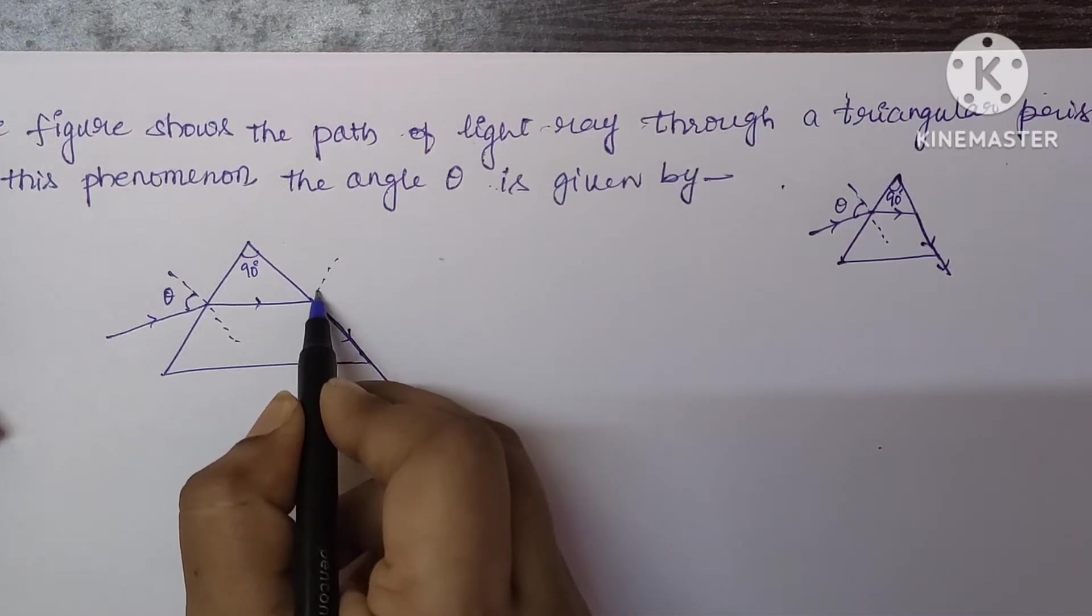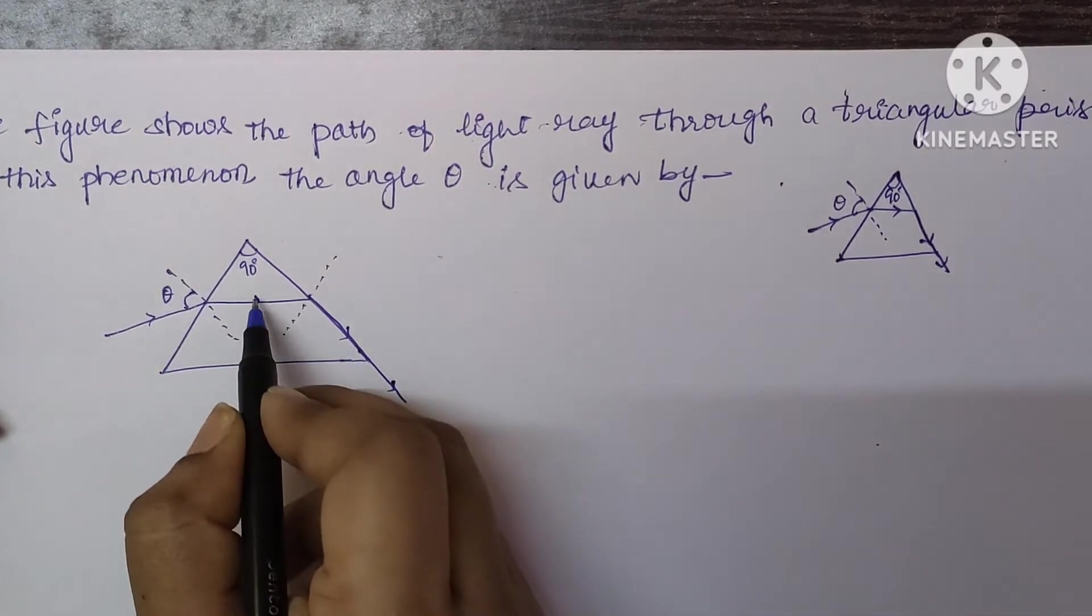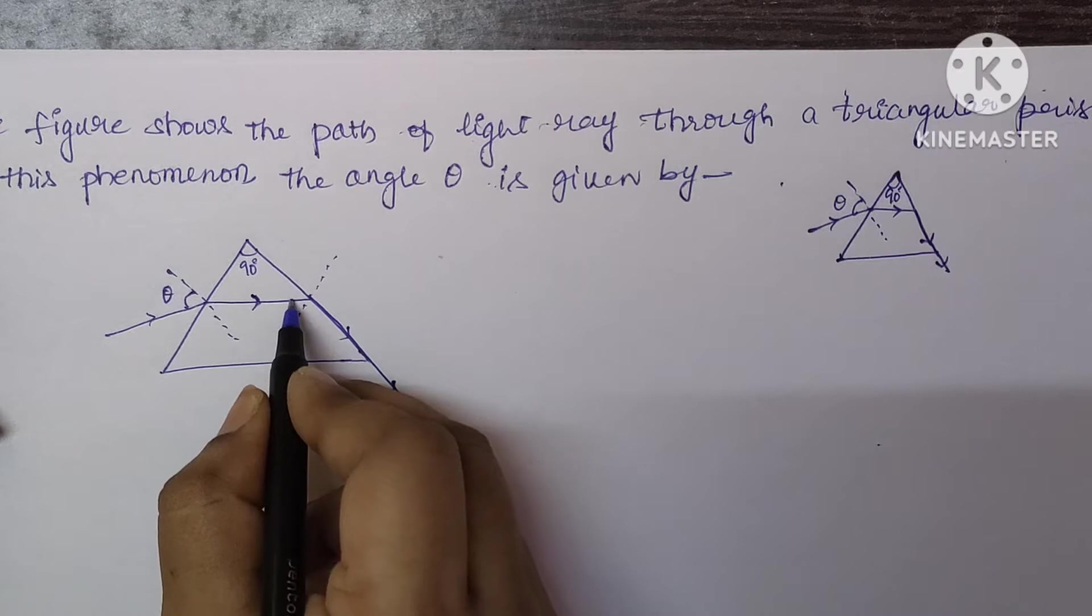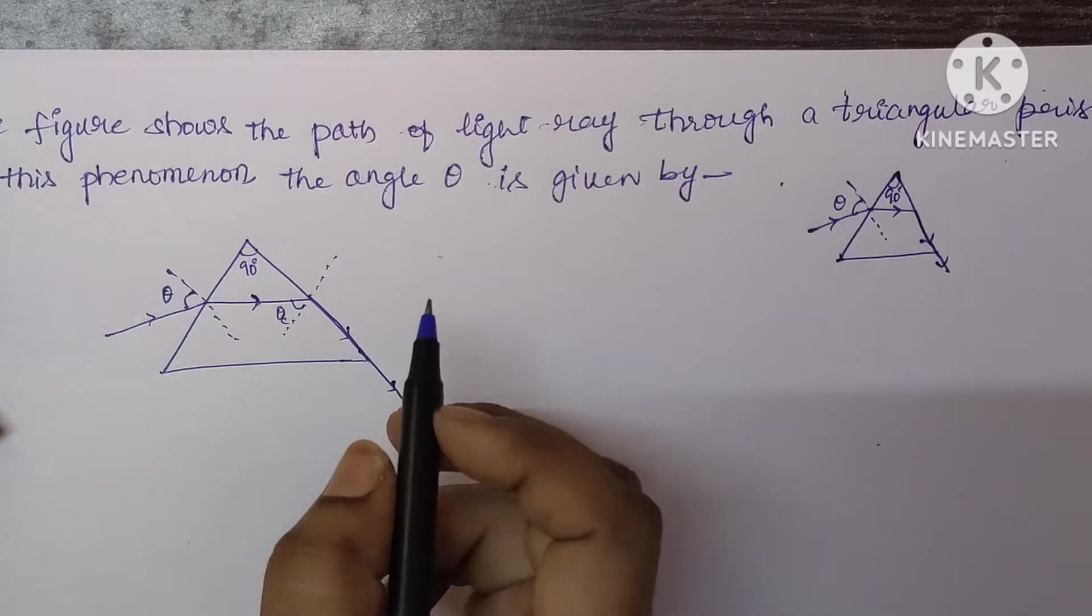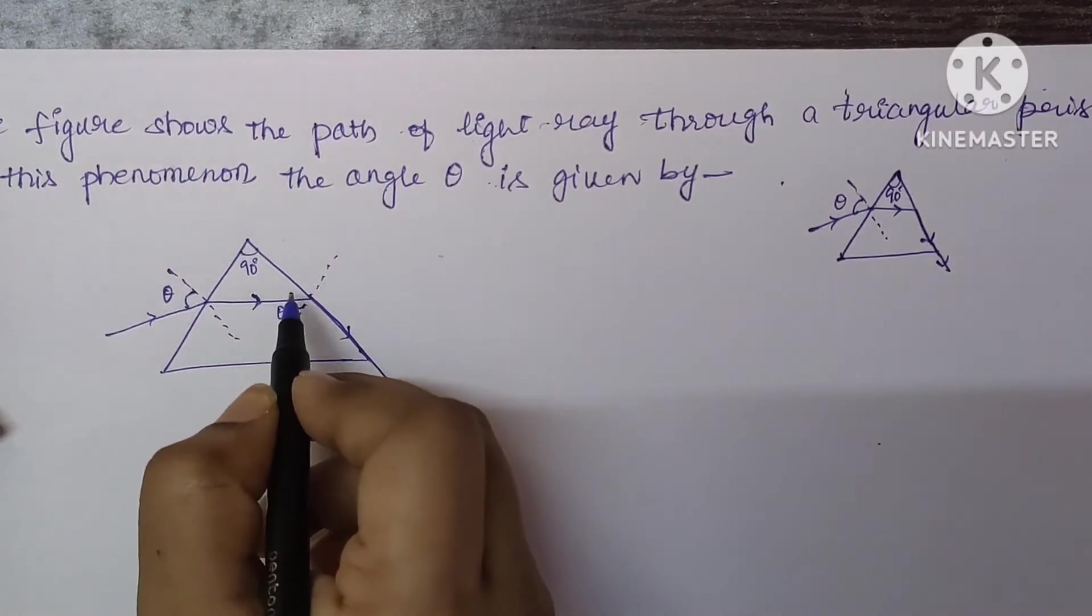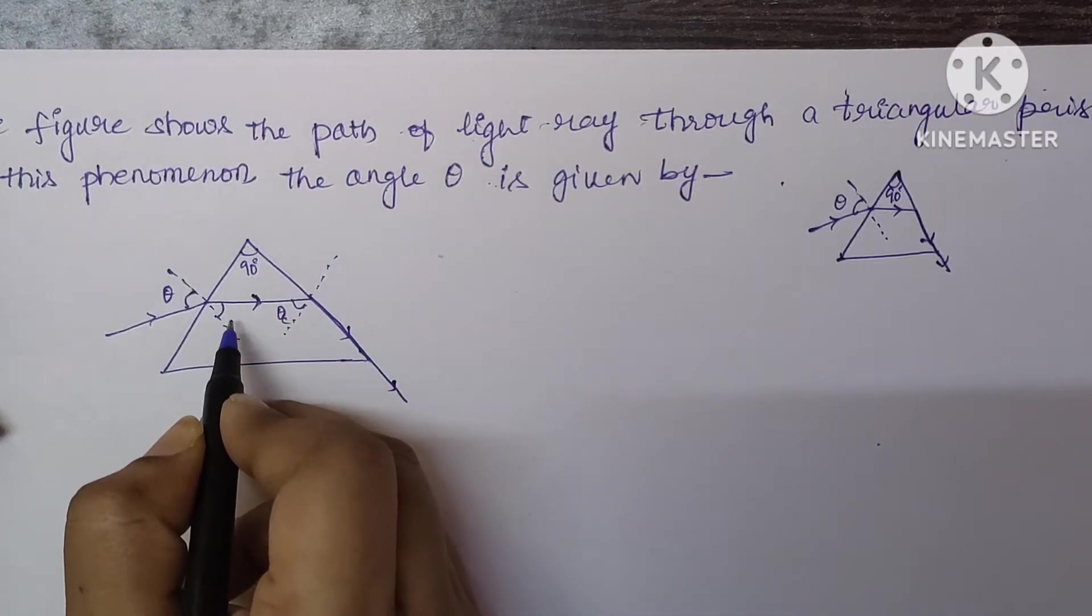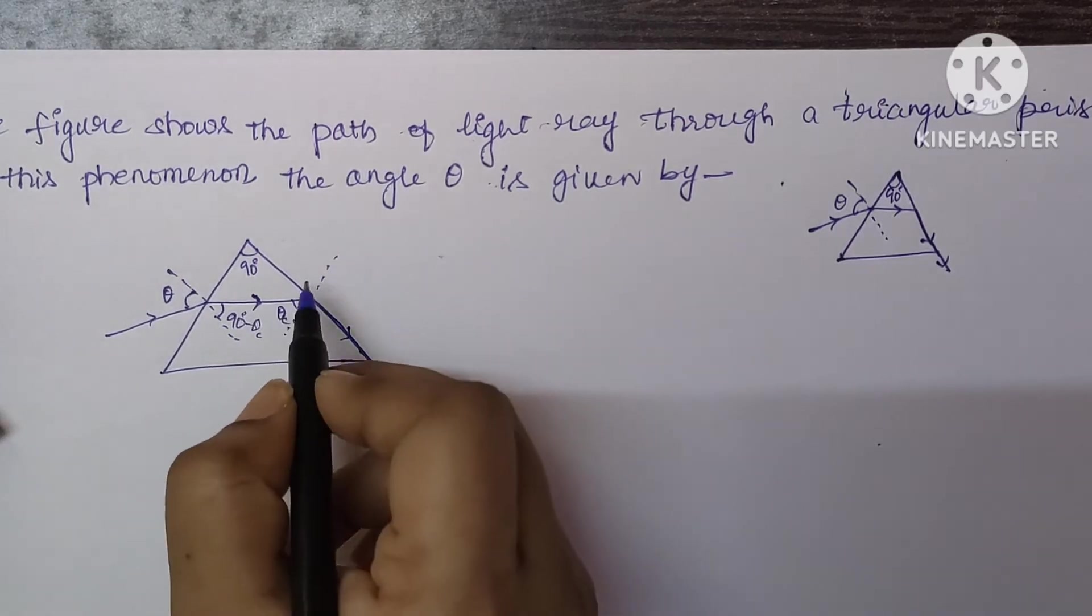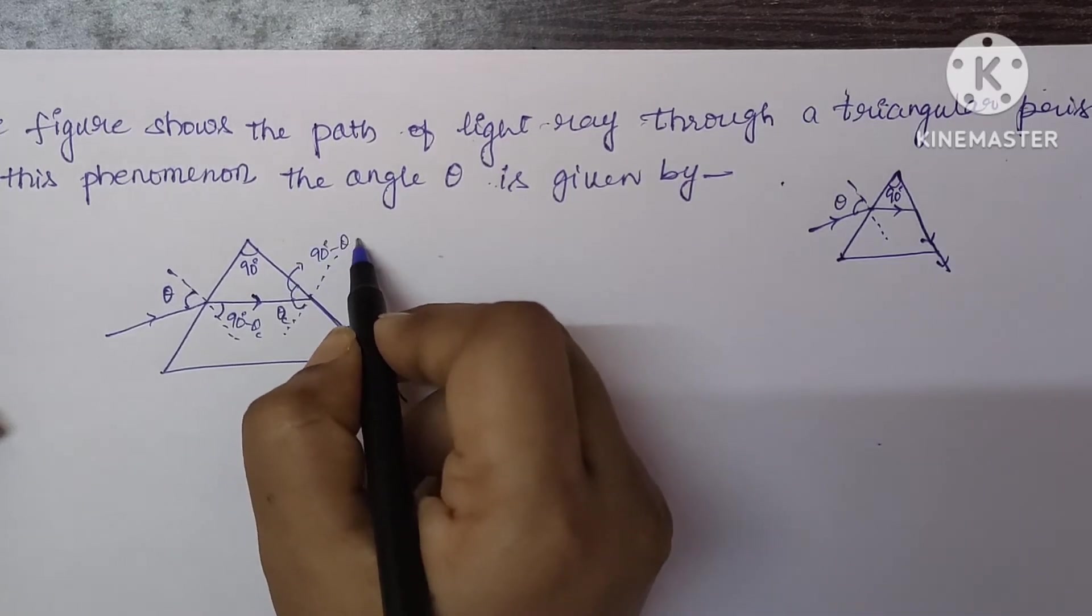This is what given in the problem. Now, draw the normal here also. In the second interface, this is the concept of critical angle. You can consider this as an incident ray for this refracted ray. This is angle of incidence. I am writing theta as theta c to show that this is the critical angle. This is going to be 90 minus theta c, and here also this is 90 minus theta c.